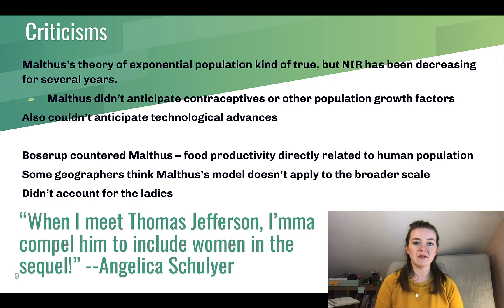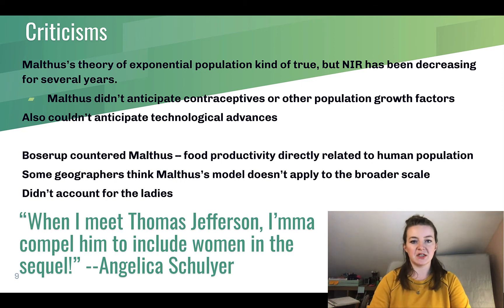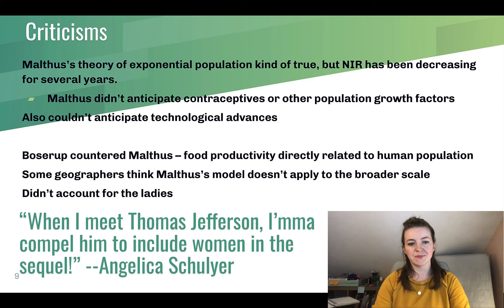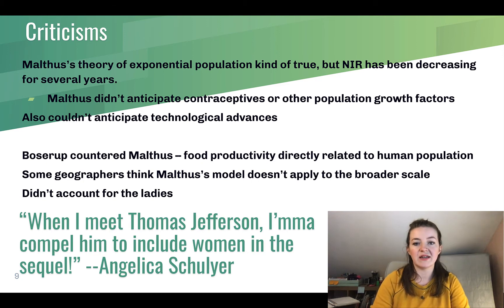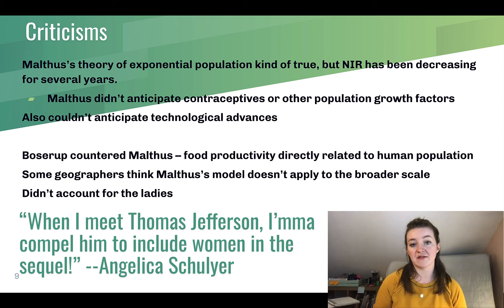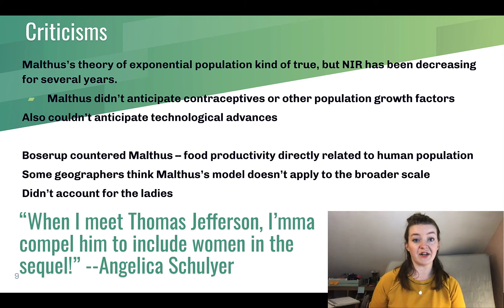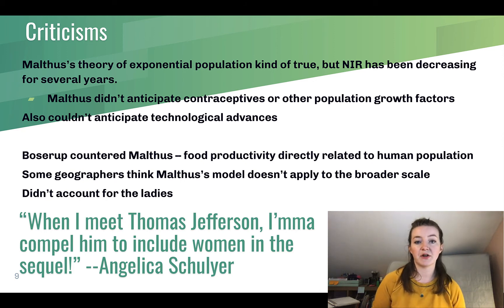Malthus and the neo-Malthusians do have critics. Malthus's theory of exponential population growth is somewhat true, but the natural rate of increase has been decreasing in recent years. He did not anticipate the use of contraceptives or other population-limiting factors. He also could not anticipate technological advances making farming much more efficient and increasing food production. Boserup, writing around the same time, countered Malthus directly.